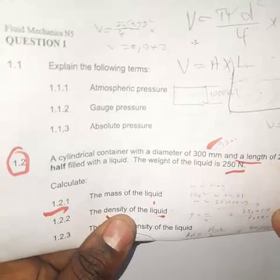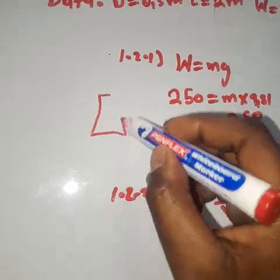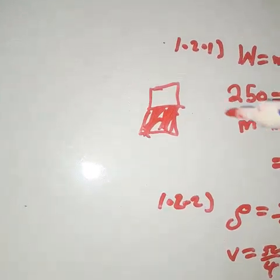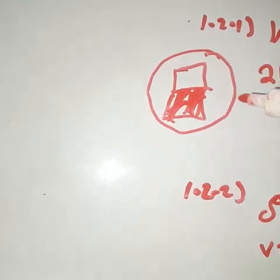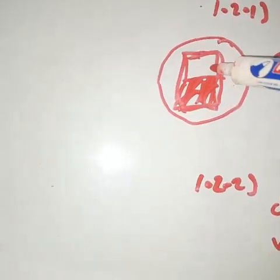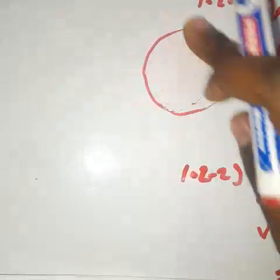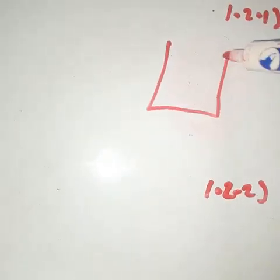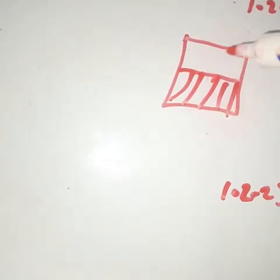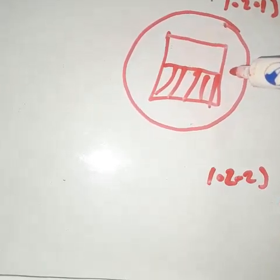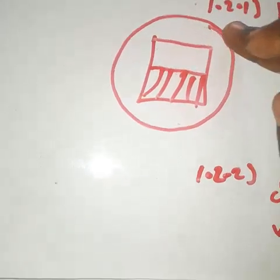The problem states the container is half filled with liquid. Since it is half filled, we calculate the volume of the entire container using the full length and area, but then divide by two. We consider only the half that is filled with liquid, so we divide the total volume by two.